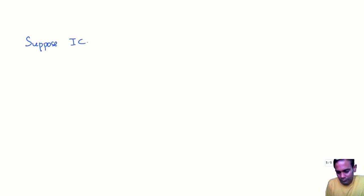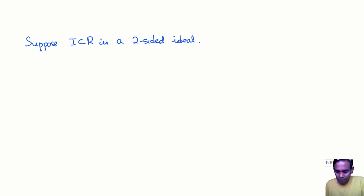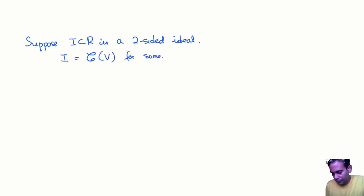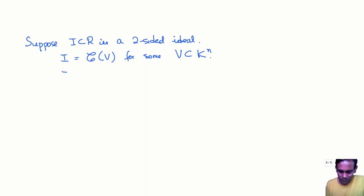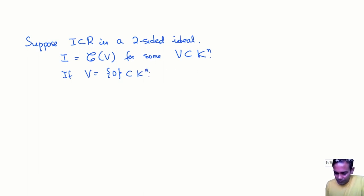Now, what about two-sided ideals in R? Suppose I is a two-sided ideal in R. Since it is a left ideal, it is of the form R(V) for some subspace V of K^N, and since it is also a right ideal it is C(V) for some subspace. Consider two cases: first, if V is the zero-dimensional subspace — just the single vector zero — then I is the zero ideal consisting only of the zero matrix.